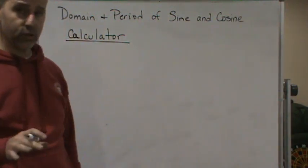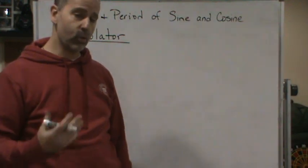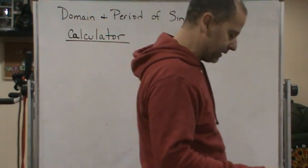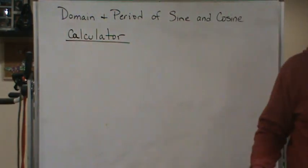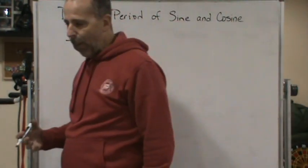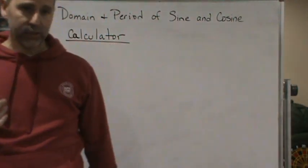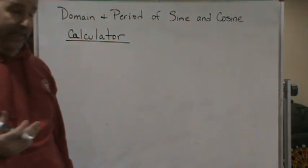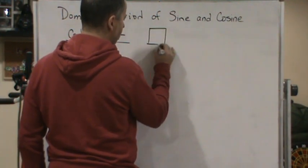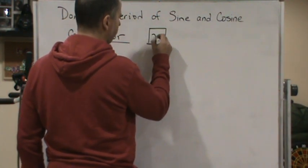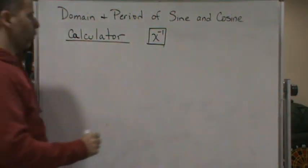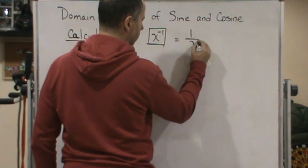Now, the other thing to keep in mind is that most calculators don't have buttons for solving for cosecant, secant, and cotangent. So what we're going to have to do is use the inverse key, which is a button that has x to the negative 1 power, which is equal to 1 over x.